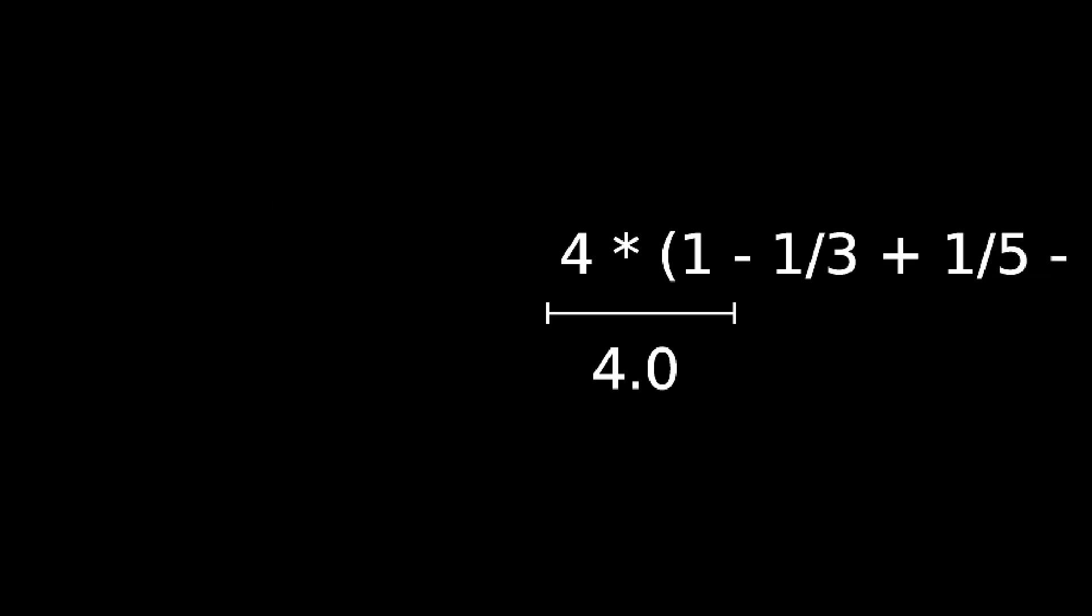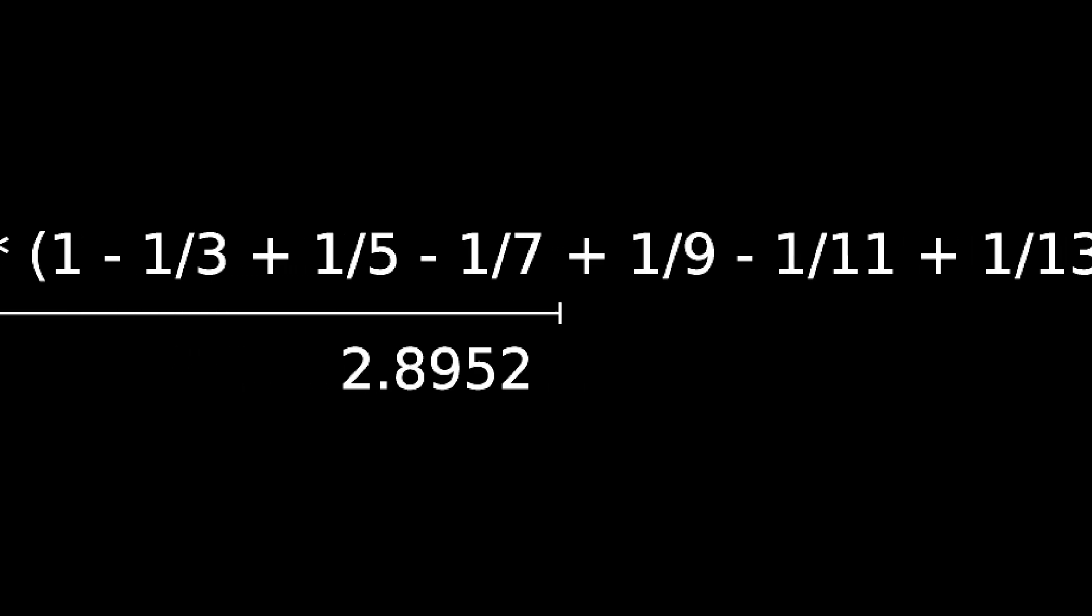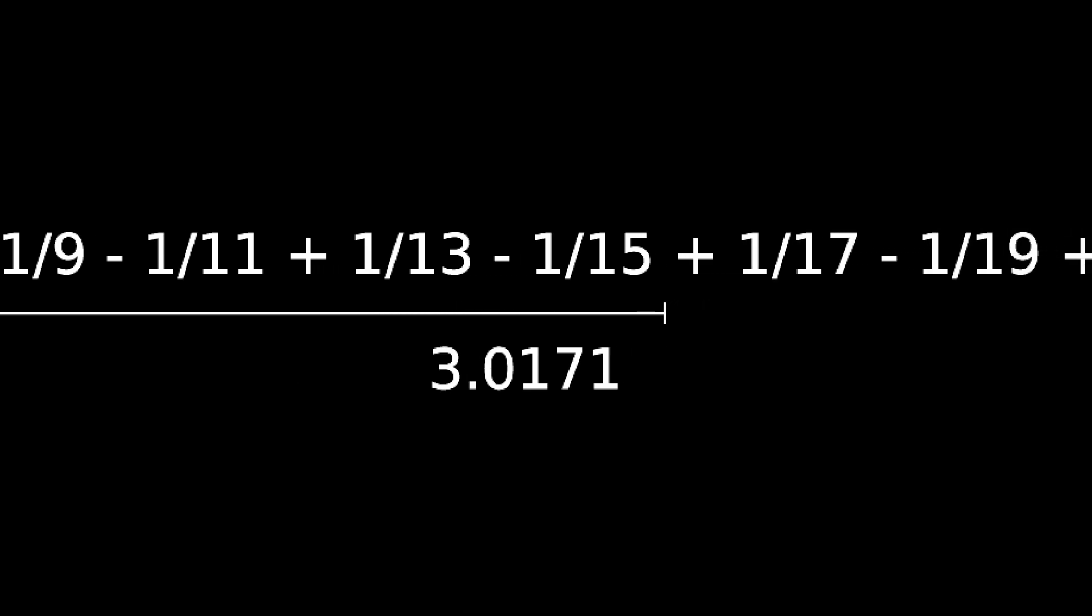One famous example is the Leibniz series. If you take four times, parentheses, one minus a third plus a fifth minus a seventh plus a ninth and so on, that series actually converges to pi.